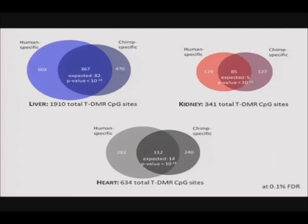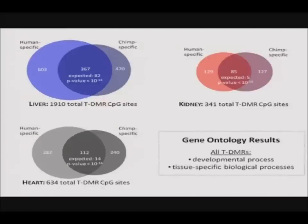Overall, there are a large number of regions showing tissue-specific methylation patterns in each tissue. The Venn diagrams indicate the number of CpG sites identified as TDMRs in only one species or in both species. We find a significant overlap of regions identified as TDMRs in both species — a conservation of this pattern that is much greater than expected by chance. Gene ontology analyses of TDMRs indicate a significant over-representation in developmental processes and tissue-specific biological processes.